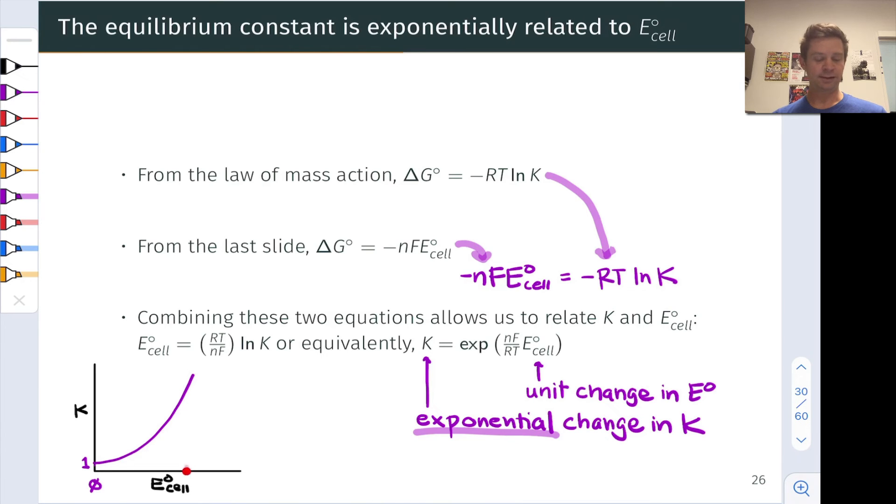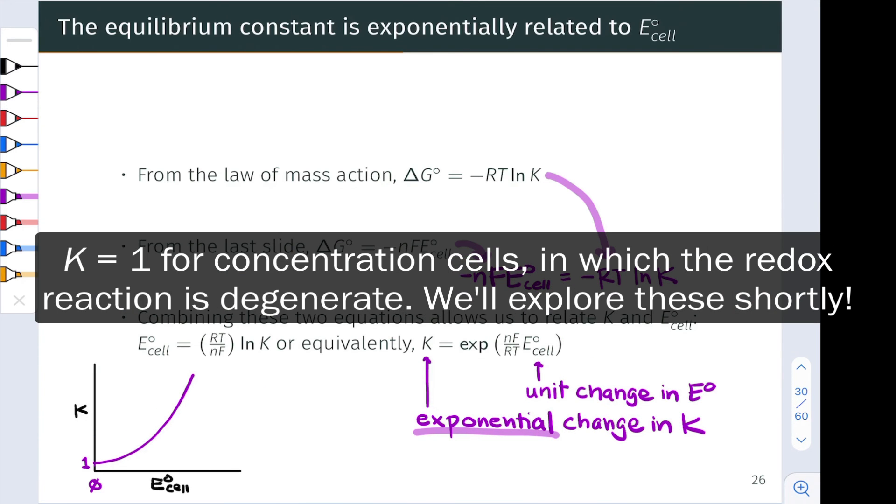When E°_cell is still relatively small, just a few volts, the magnitude of K gets very, very large for the redox reaction, much greater than one. And of course, when E°_cell is equal to zero in something like a galvanic cell at equilibrium, the value of K corresponds to one.